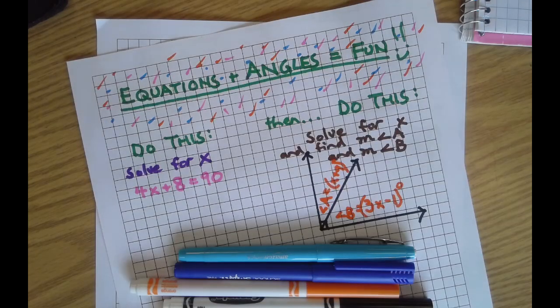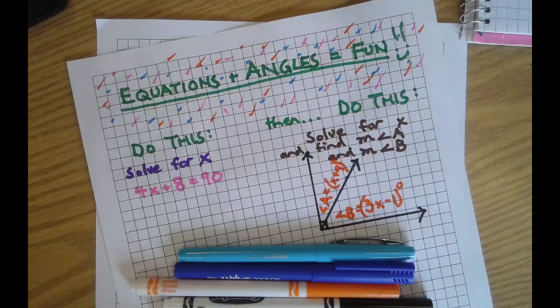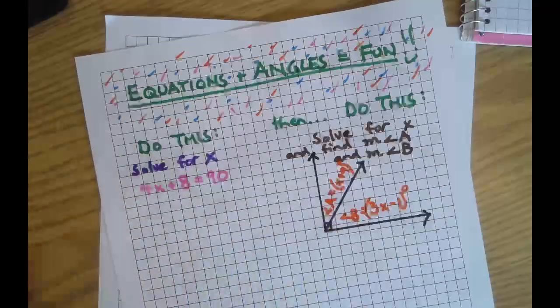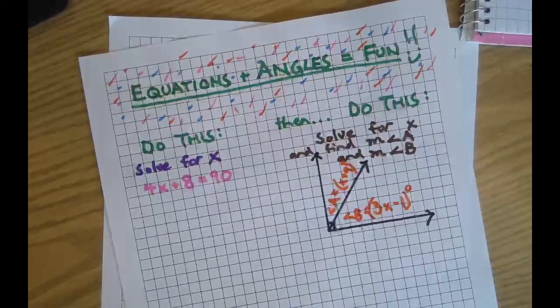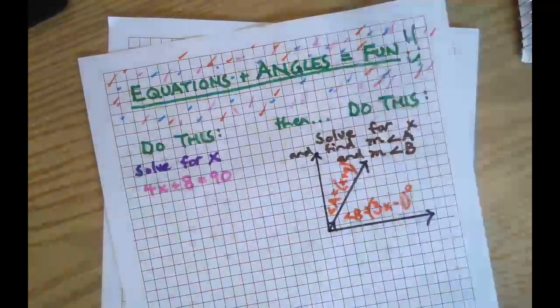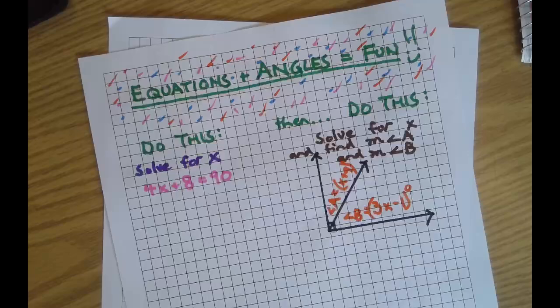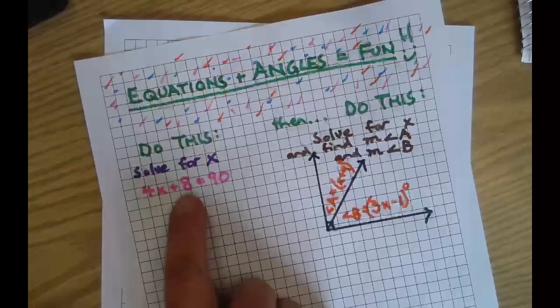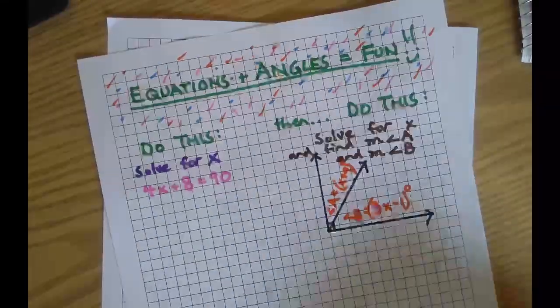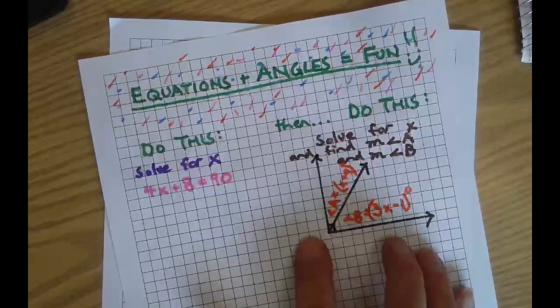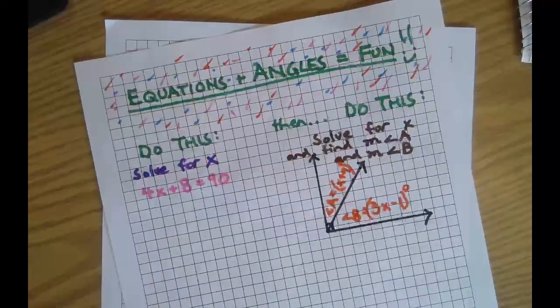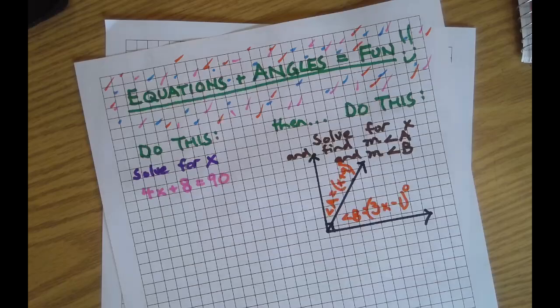And we're on. Welcome back to the Witcher Math channel on this Wednesday, May 23rd, the year 2024. Today we're going to combine our vast knowledge and skill of solving single variable equations, such as the pink one you see here, and combining that with our newfound knowledge of the characteristics of different types of angle pairs.